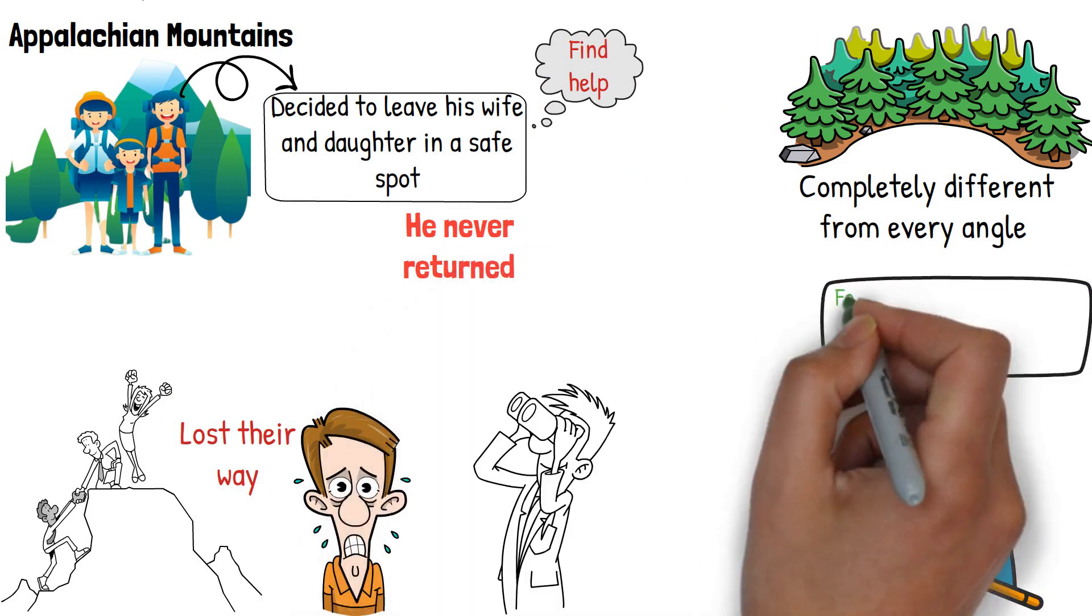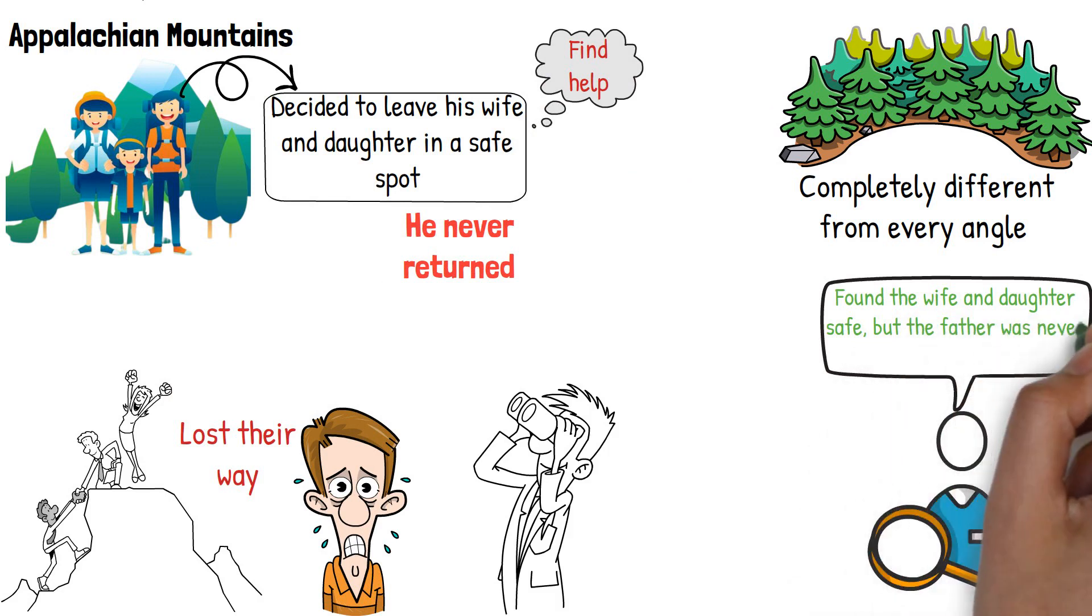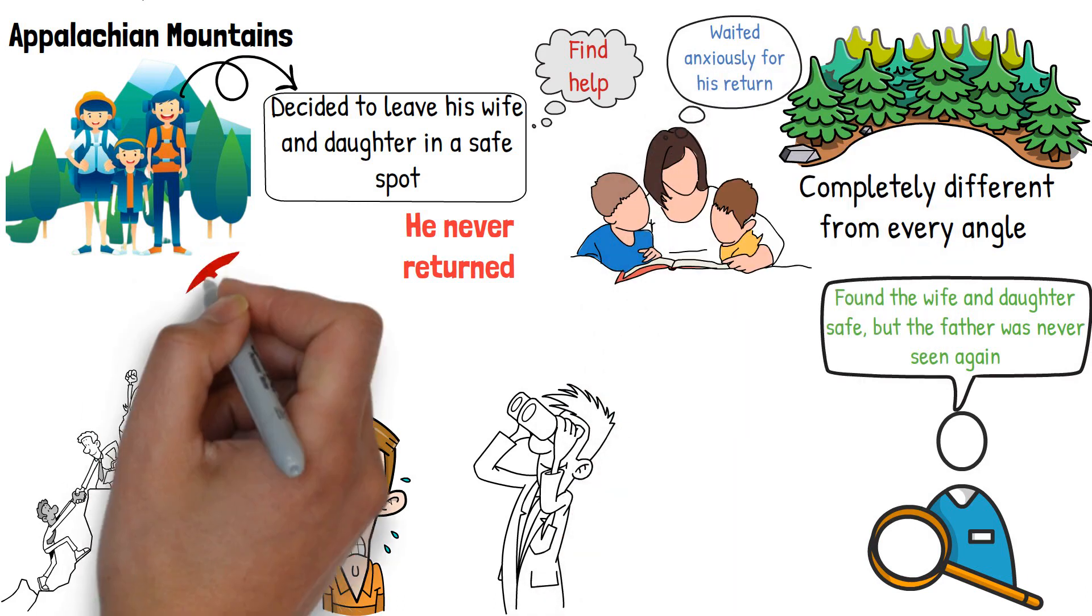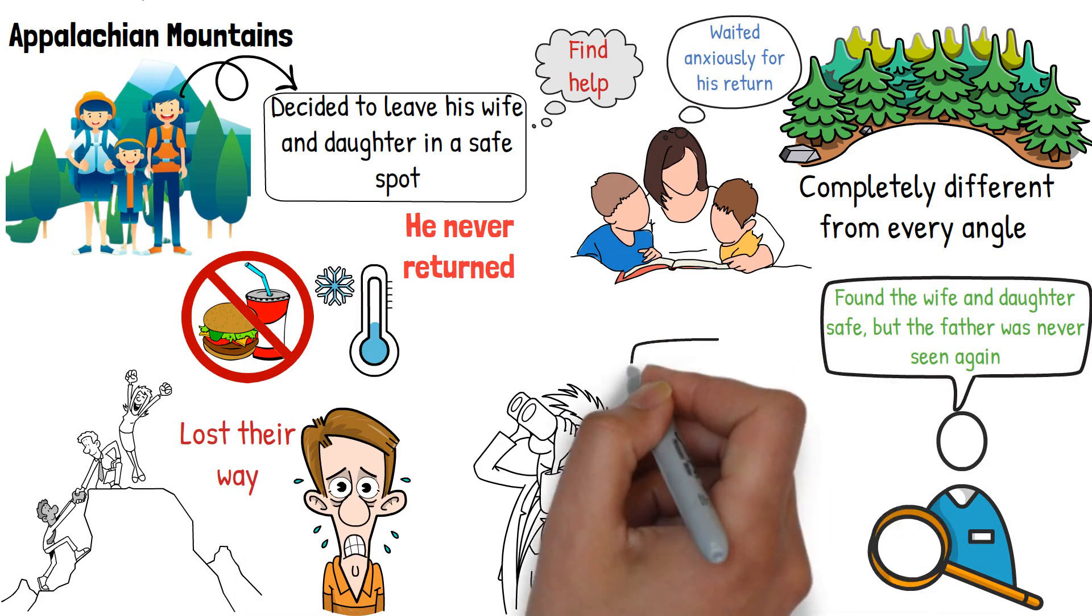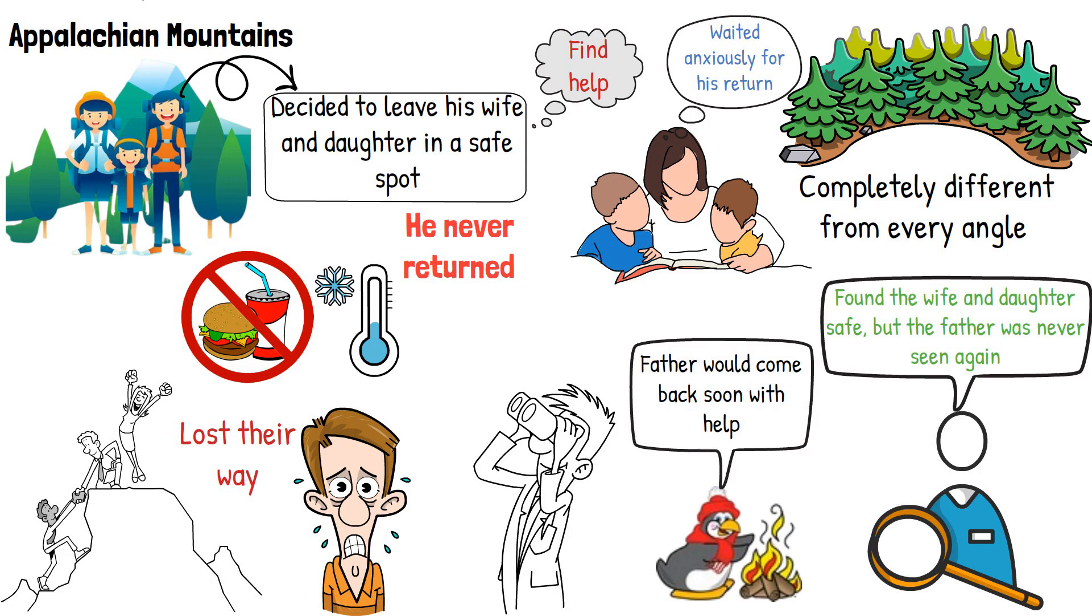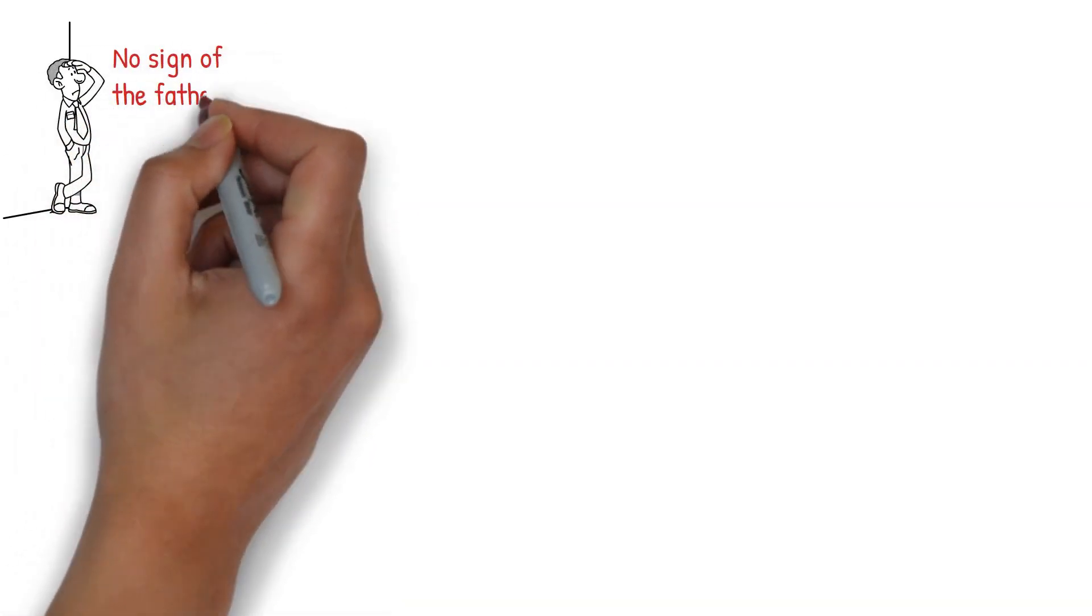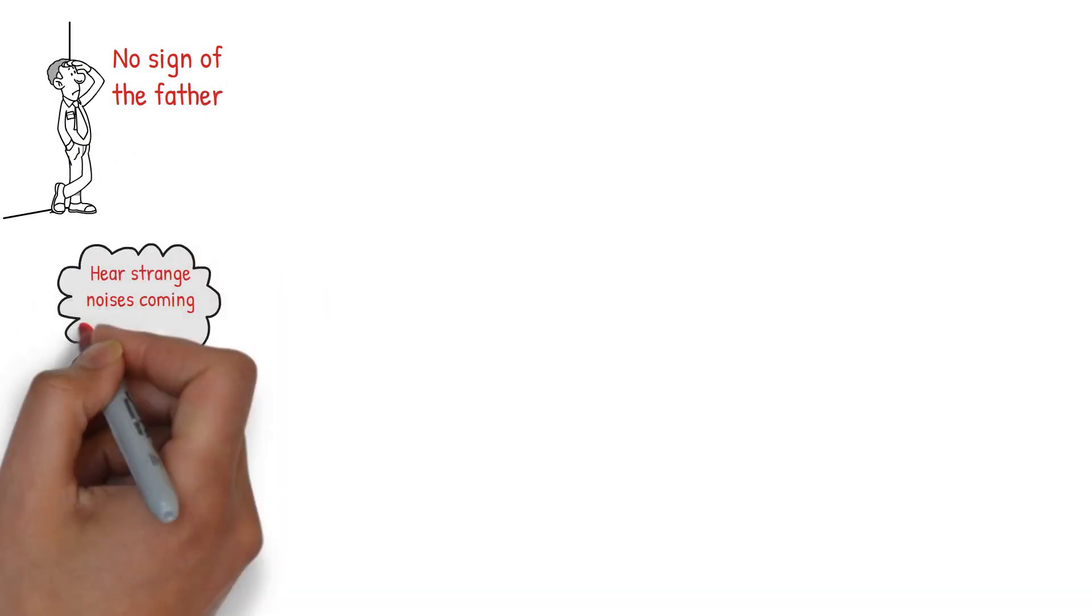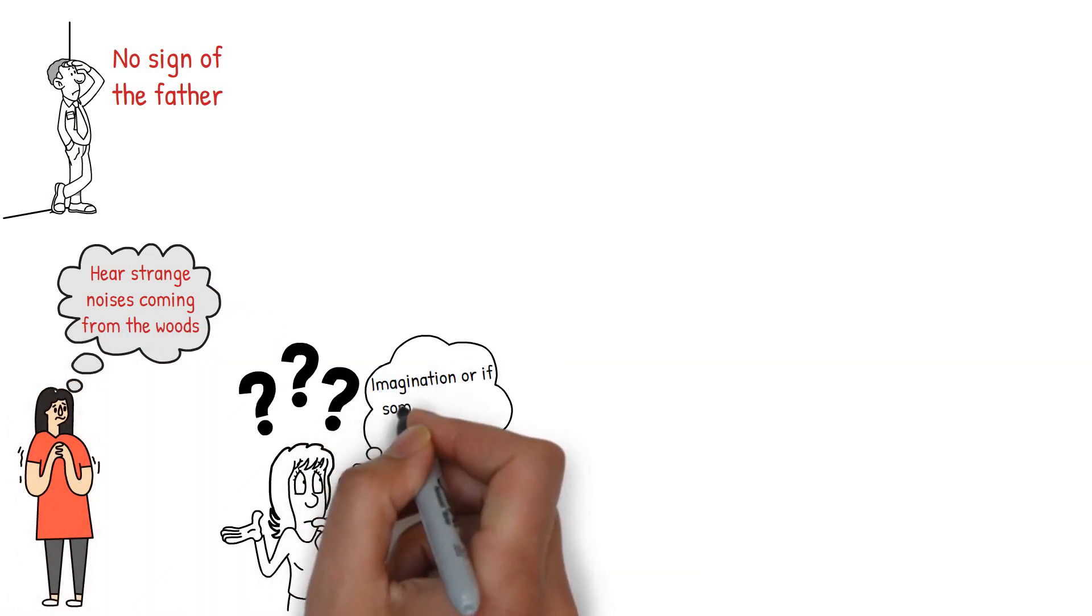The search team found the wife and daughter safe, but the father was never seen again. As the father went to find help, the wife and daughter waited anxiously for his return. They had no food or water, and the temperature was dropping as night approached. They tried to keep themselves warm and calm, hoping that the father would come back soon with help. Hours went by, and there was still no sign of the father. The wife and daughter were growing increasingly worried, and they started to hear strange noises coming from the woods. They didn't know if it was just their imagination, or if something was actually out there.